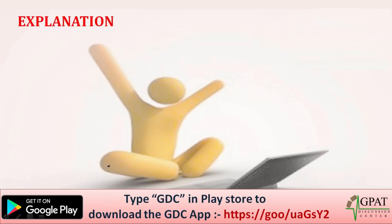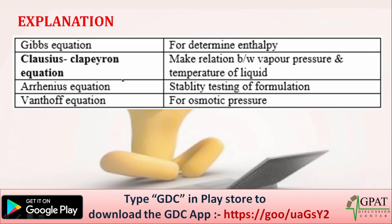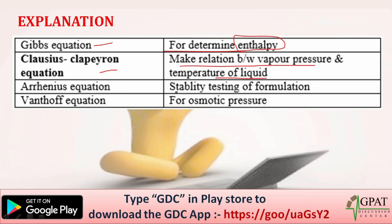In the explanation: the Gibbs equation is used for determination of enthalpy. The Clausius-Clapeyron equation gives the relation between vapor pressure and temperature of a liquid. The Arrhenius equation is used for stability testing of formulations. The Van't Hoff equation is used for osmotic pressures. The correct answer is Clausius-Clapeyron equation, option B.